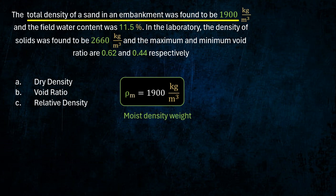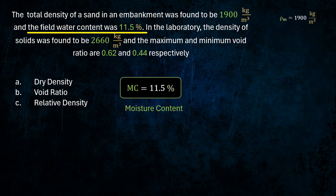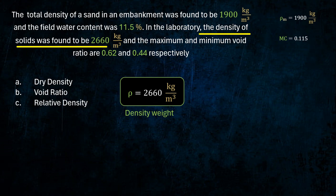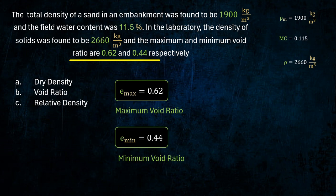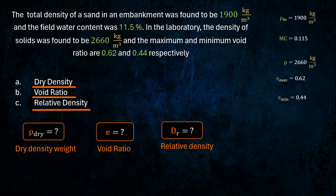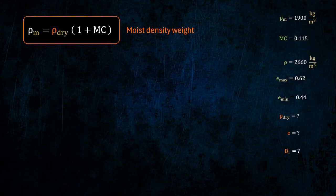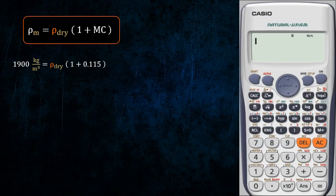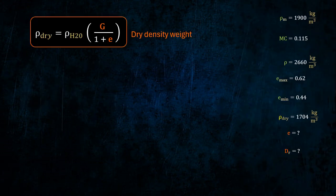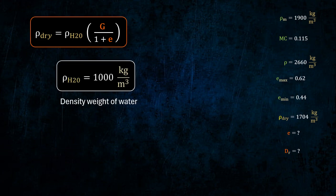Moist density, moisture content, density weight, maximum and minimum void ratio. Moist density weight, density weight, density weight of water.